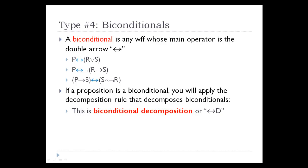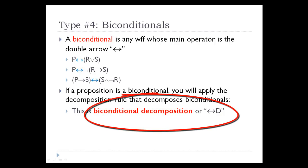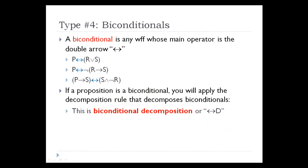No surprise: when we find biconditionals — a well-formed formula whose main operator is the double arrow — the corresponding rule will be biconditional decomposition. We haven't talked about how to use any of these rules, but the key thing to see is that for any formula you might come across, it might fall into one of these four types. You'll know that if it's a conjunction, apply conjunction decomposition, and so forth.